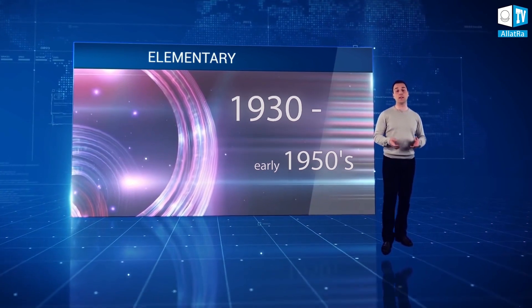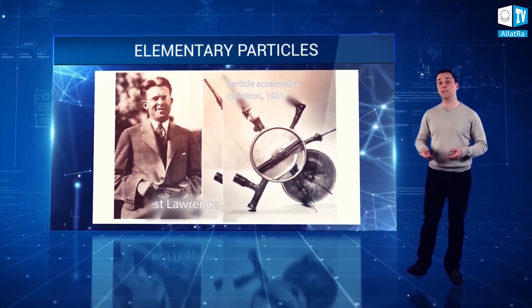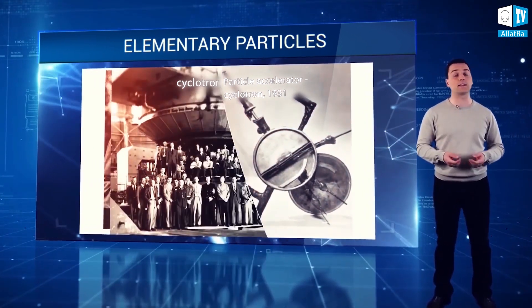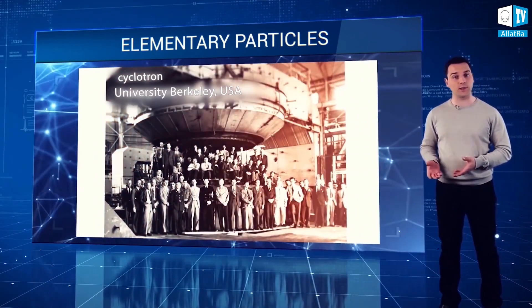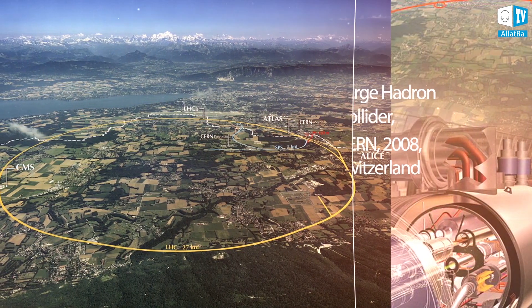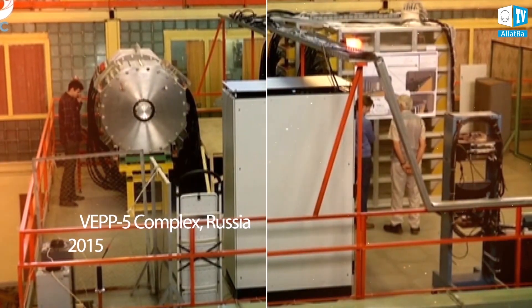Since 1930 and almost to the beginning of the 1950s, the research was closely connected with the study of cosmic rays. Starting in the 1950s and until today, the main tool in physics for the research of elementary particles became accelerators, and the object of study — new elementary particles which appear during the collision of accelerated protons and electrons with matter.